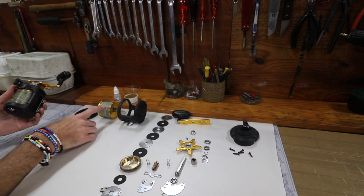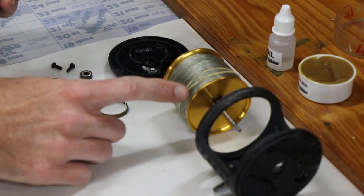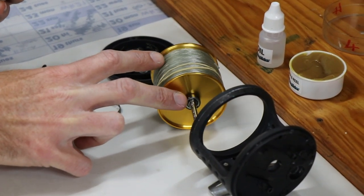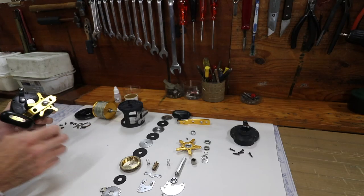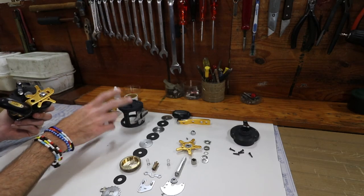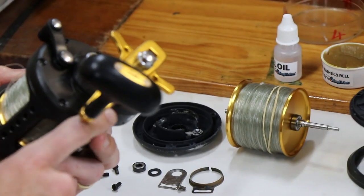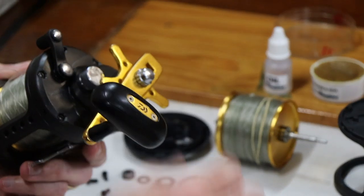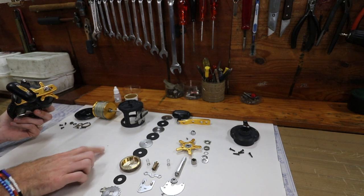Next step we take out the spool, which is the spool here. We remove the spool, assess the bearings, strip the right hand side plate, which is obviously on the right hand side of the reel. All the screws come off, the handle comes off and you see all the parts inside the reel.